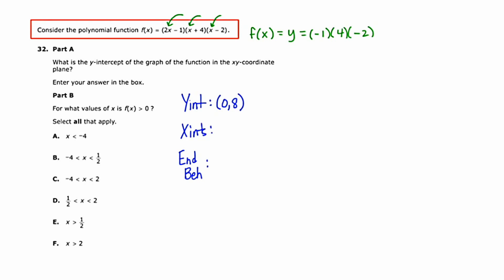Now the next thing that I'm going to do is I'm going to find the x-intercepts. To find the x-intercept, we let y equal zero, or in this case, we're going to let f(x) equal zero. So if I do that, I get 0 = (2x - 1)(x + 4)(x - 2). Using the zero product property, I can set each factor equal to zero to get the three x-intercepts.